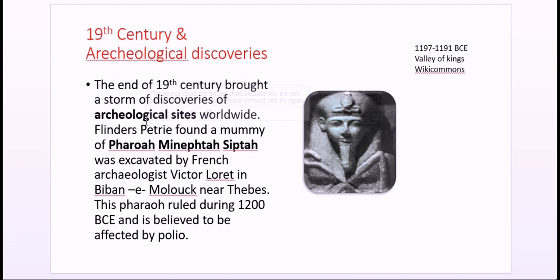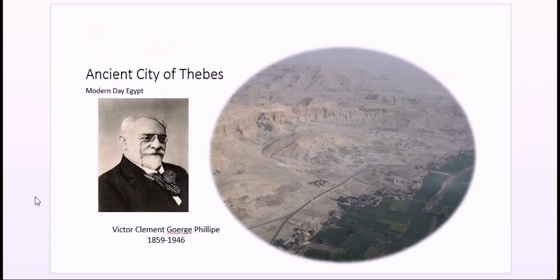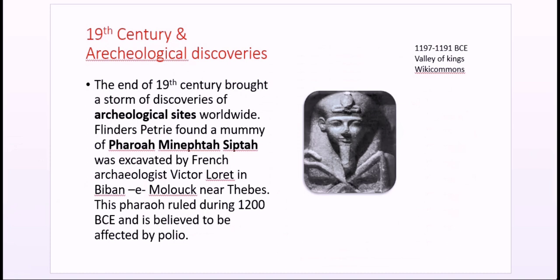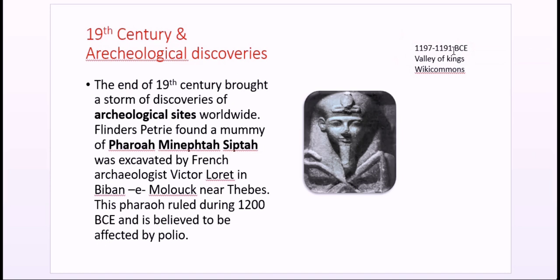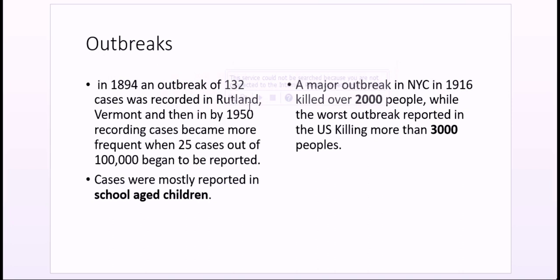In the 19th century, the dawn of archaeological discoveries began. When a number of archaeological sites were uncovered globally, Flinders Petrie found the mummy and statue of Pharaoh Merneptah in the ancient city of Thebes. This pharaoh ruled from 1197 to 1191 BC. In 1894, an outbreak of 132 cases was recorded in Vermont, USA. By 1950, cases had grown significantly, with 25 out of 100,000 people reported. Cases were usually reported in school-age children, confirming it as a viral disease affecting children.